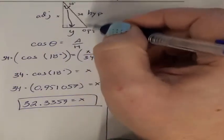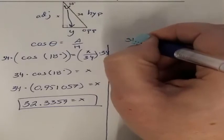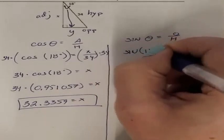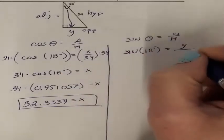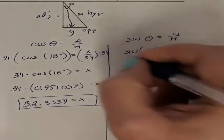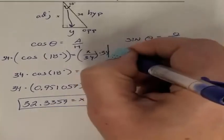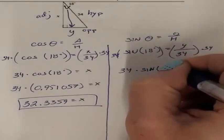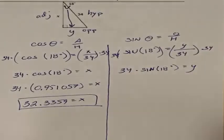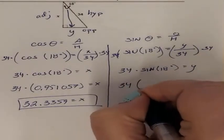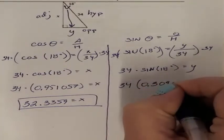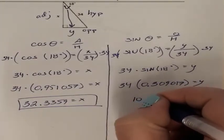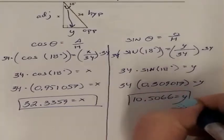Now for the opposite — opposite and hypotenuse is sine. Sine of 18 degrees equals Y over 34. Multiplying both sides by 34, I get 34 times sine of 18 degrees equals Y. Sine of 18 degrees is 0.309017, and multiplied by 34 gives me 10.5066 as my missing Y value.